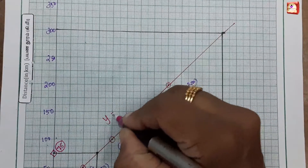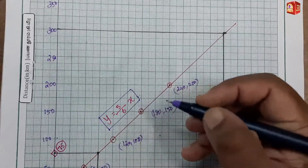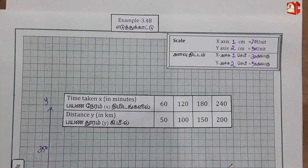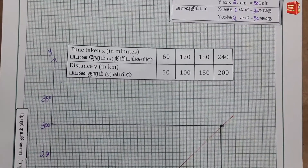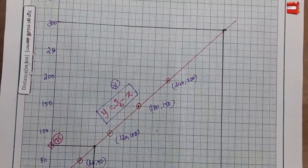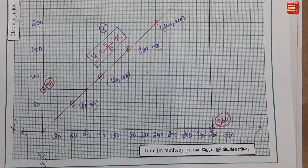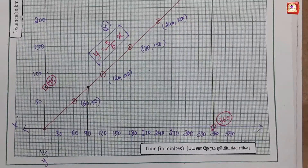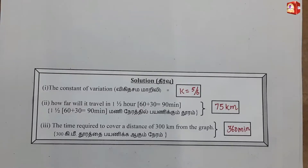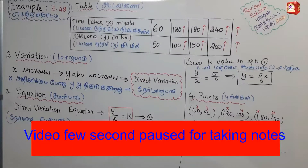This is the equation we add to the graph: Y equals 5 by 6 times X. The line on the graph represents this equation.